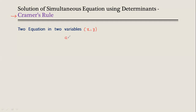Suppose you have two simultaneous equations: A1x plus B1y equals C1 — this is your first equation — and the second equation is A2x plus B2y equals C2. These are two simultaneous equations and you have to find x and y.